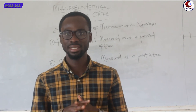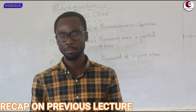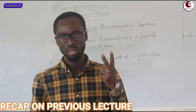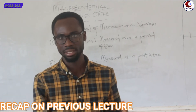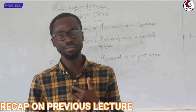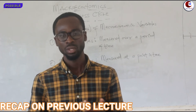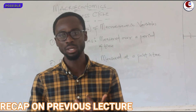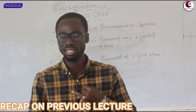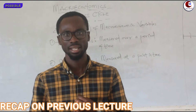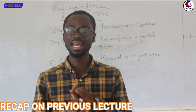In our previous lecture, we started with the cyclical behavior of economic variables. We saw that it could be viewed in two ways: the direction of the variable and the timing of the variable. Under direction, we saw something called pro-cyclical, whereby variables move together in a positive direction. And then we saw counter-cyclical, where there is a negative relationship between the macroeconomic variable and the business cycle.